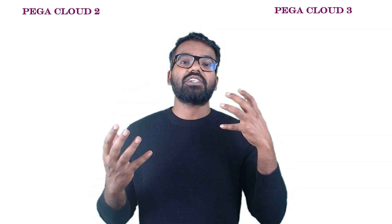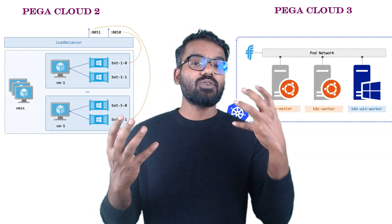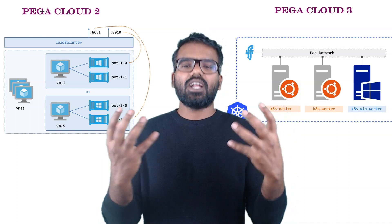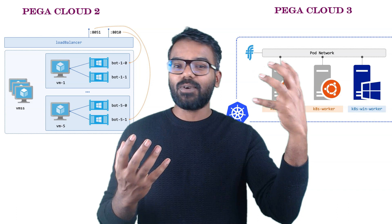Now, back to the point — the difference between Pega Cloud version 2 and Pega Cloud version 3. Version 2 uses VM-based deployments, while version 3 uses Kubernetes-based deployments. Version 3 is more advantageous, and in the second quarter of 2023, Pega started rolling it out with customers being onboarded onto Pega Cloud version 3.